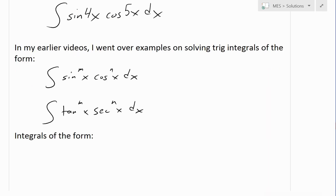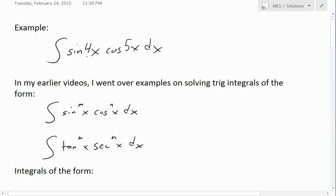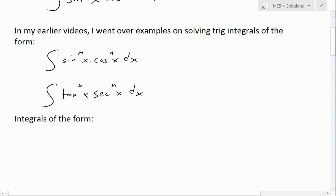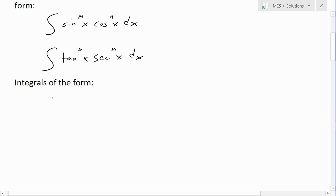Now these are the ones we covered so this one's different because there's a 4x, 5x, there's an integer inside of the sine. These are just the powers and also integrals of the form cotangent m of x and then cosecant of n of x dx.